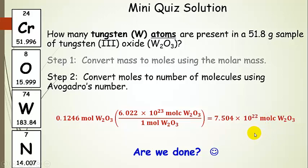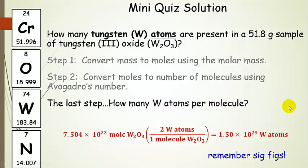Now ask yourself: are we done? We go back and look at our problem — it's asking for tungsten atoms, and this is not tungsten atoms yet. So we need one more step. Remember: when you want the number of atoms, you look at the chemical formula. We ask how many tungsten atoms per molecule — from W₂O₃, we can see there are two. For every one molecule of tungsten oxide, we get two tungsten atoms. Multiplying, we get 1.50 times 10 to the 23rd tungsten atoms. Note the significant figures: we started with three, we end with three — carrying extra digits throughout and rounding at the very end.